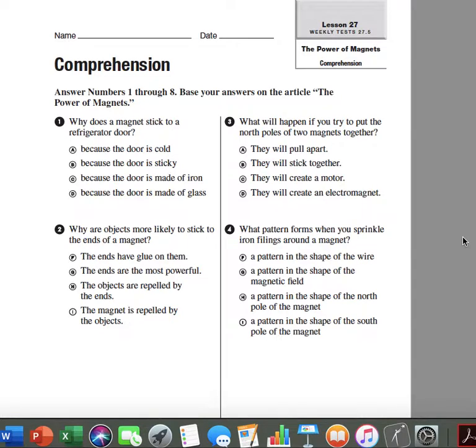Number 4. What pattern forms when you sprinkle iron filings around a magnet? F. A pattern in the shape of the wire. G. A pattern in the shape of the magnetic field. H. A pattern in the shape of the north pole of the magnet. I. A pattern in the shape of the south pole of the magnet.